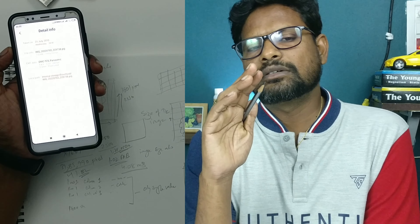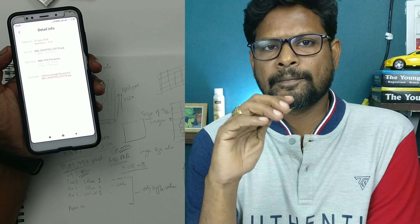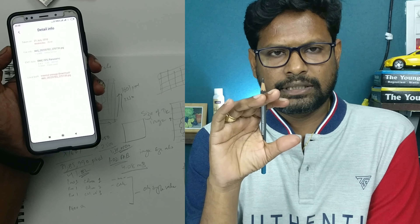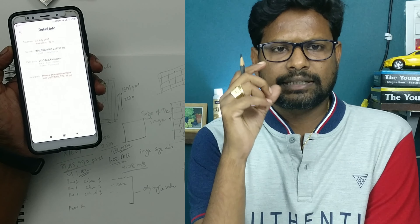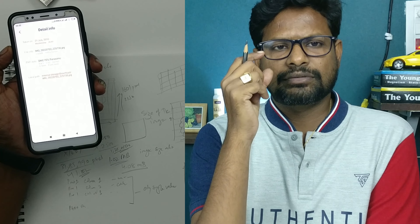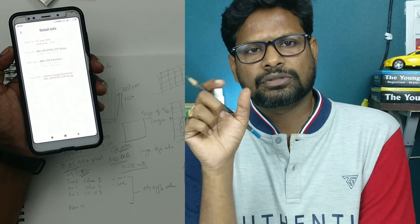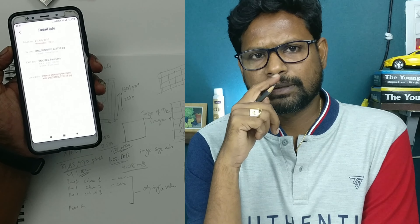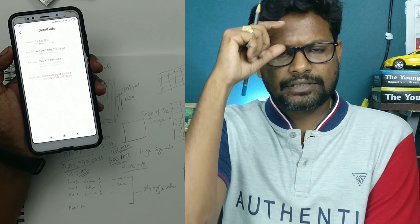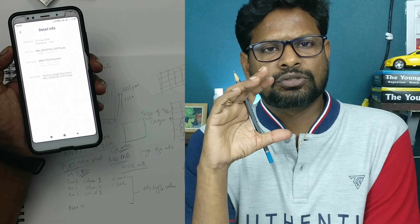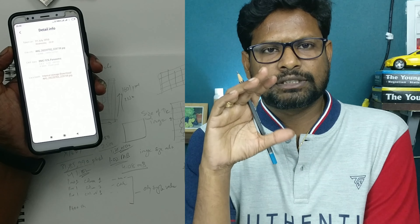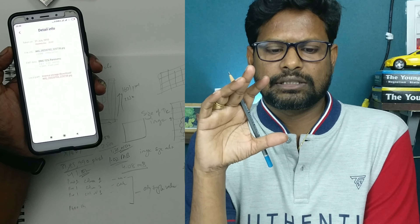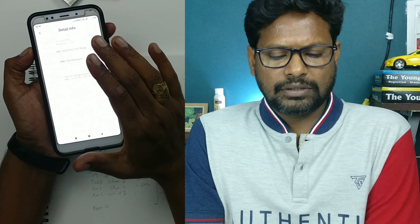So there are two uses of the grid: the first use is to get the proportions right — the separation between the eyes, the length, breadth and size of the eyes, the width of the nose, the difference between the lips and the nose, the size of the forehead, all this stuff. The second use is to enlarge the image. Now I am going to draw a grid on the image that they have sent.